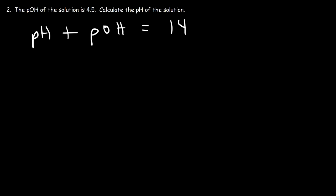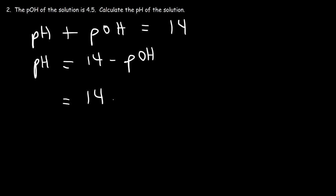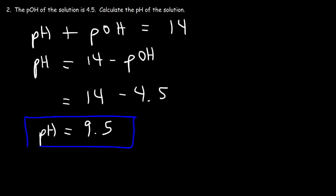This is because KW, the autoionization constant of water, is 1 times 10 to the minus 14. So to calculate the pH, it's simply 14 minus the pOH. That's going to be 14 minus 4.5. Now, 14 minus 4 is 10, and 10 minus 0.5 is 9.5. So 9.5 is the pH of the solution.